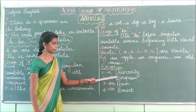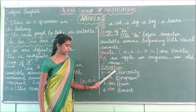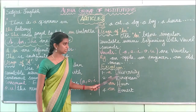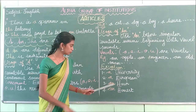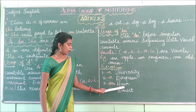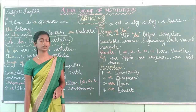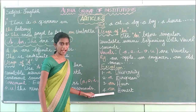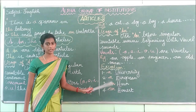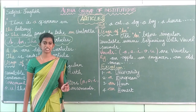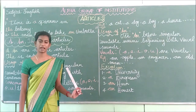There are some exceptional words. Look here: 'university' and 'European'. These words start with the letters U and E, which are vowels. But they sound like 'you', so we have to use the article 'a' — a university, a European. Similarly, 'honest' and 'hour' start with the letter H, but the H is silent and they sound like a vowel, so we use 'an' — an honest man, an hour.